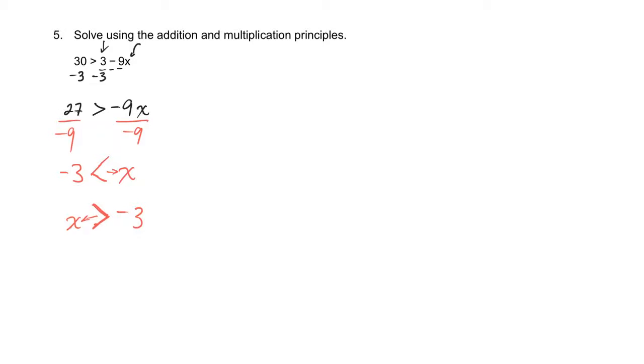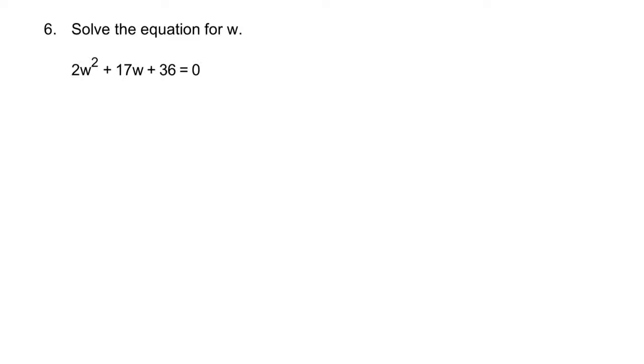All right, okay, a couple quadratic ones. This one says solve the equation for w. If it's a quadratic, I need to factor this expression. So what I'm wanting to do is get down so it's something times something is equal to zero. If there's a number in front, I can use the AC method. So I'm gonna go two times 36 is 72. So I need to get two numbers that multiply to 72, and the same numbers need to add to 17.